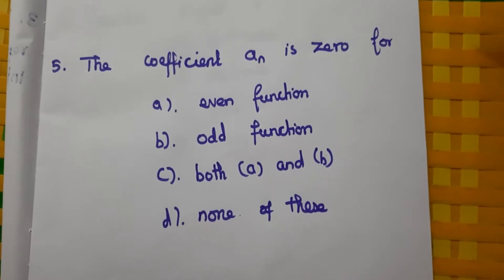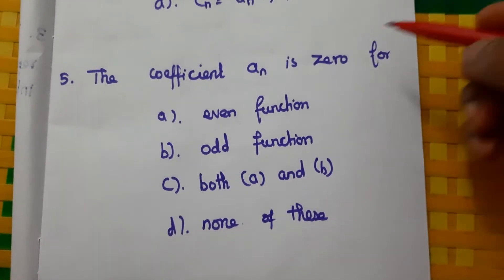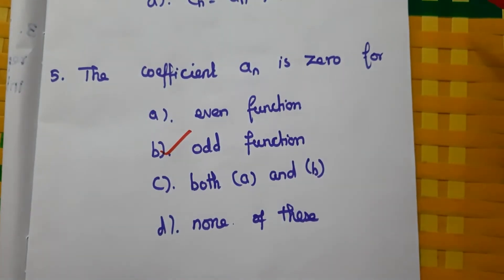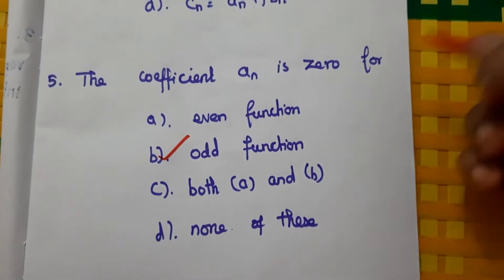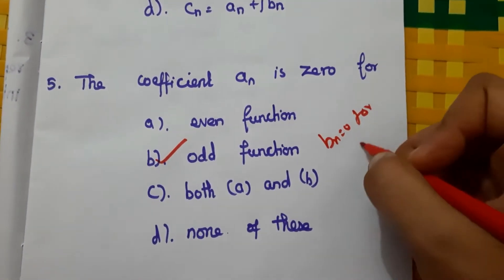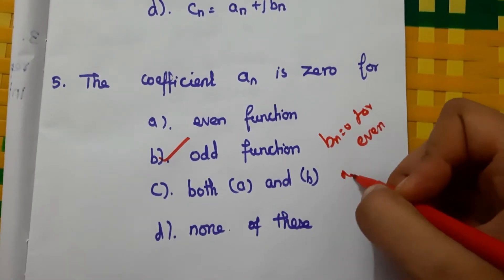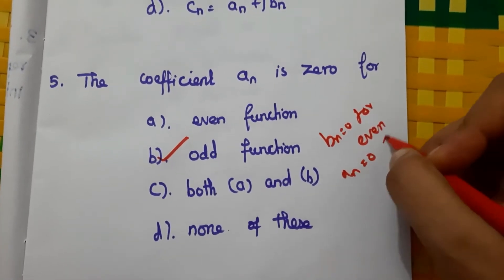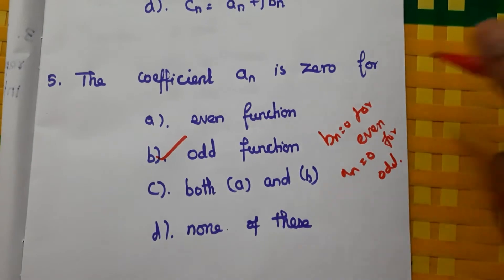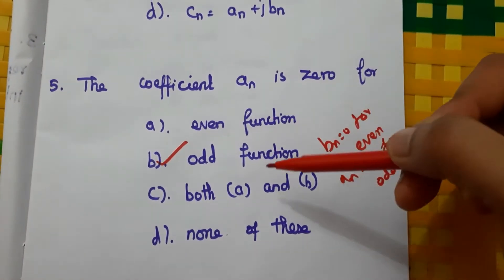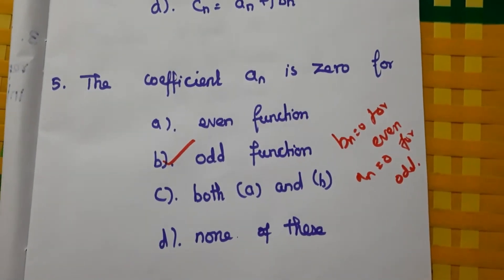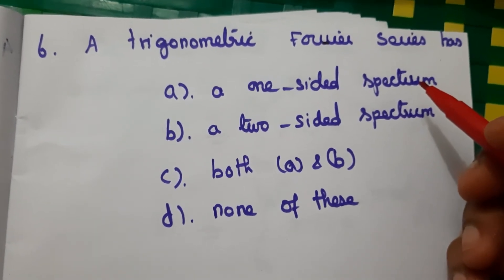Fifth question: the coefficient aₙ is 0 for an odd function, and bₙ is equal to 0 for an even function. Since they are asking for aₙ, the answer is B — odd function.